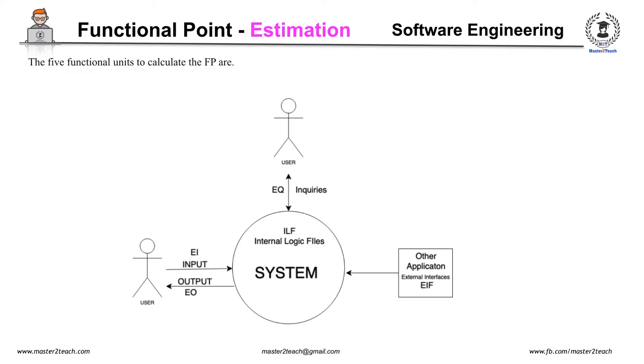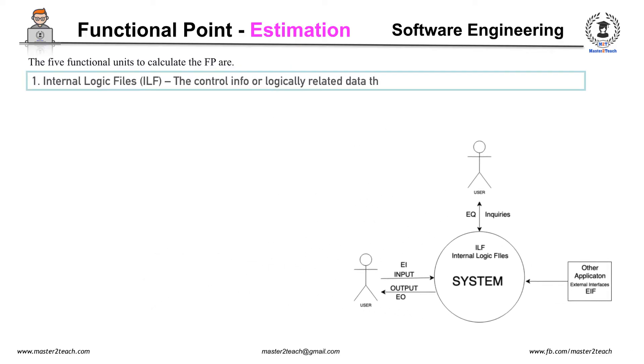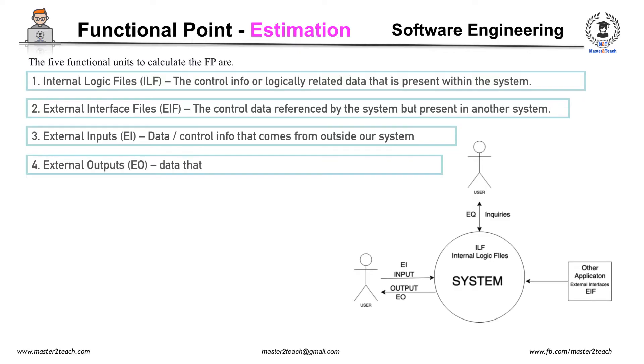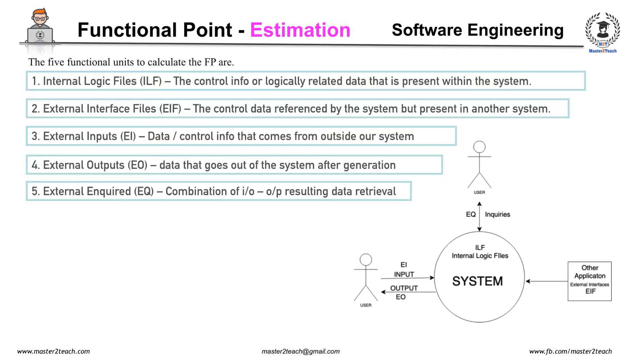The five functional units which are considered information domains as input to calculate the functional point are: Internal Logic Files, the control info or logically related data that is present within the system. External Interface Files, the control data or other logical data referred by the system but present in another system. External Input, data or control input that comes from outside our system. External Output, data that goes out of the system after generation. External Inquiries, alternation of input and output resulting data retrieval.